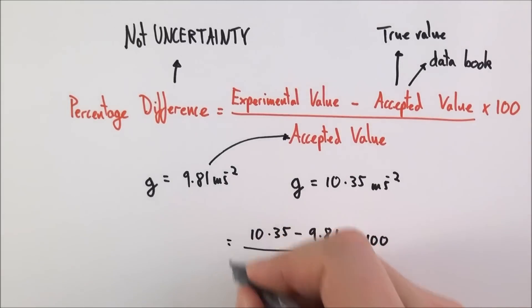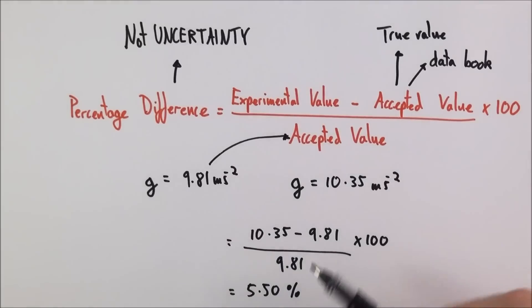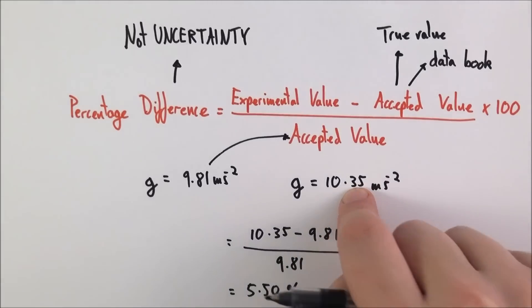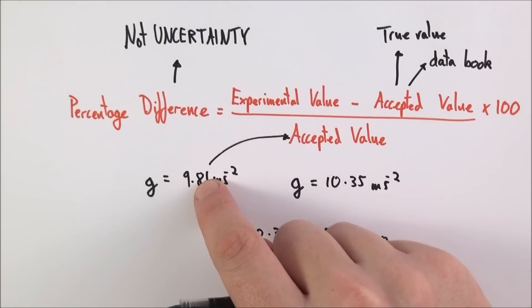If we do that, we find that the percentage difference in this case is equal to 5.50 percent. I've given my value to three significant figures, like the lowest number of significant figures here. So we know that 10.35 is about 5.5 percent off what the true value should be.